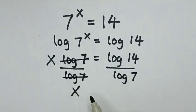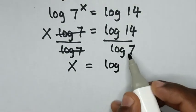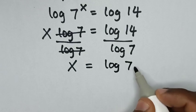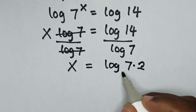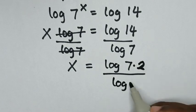Then it will be x equals log of 14. 14 is the same as 7 times 2, over log of 7.